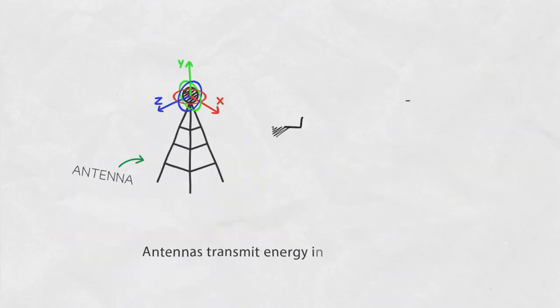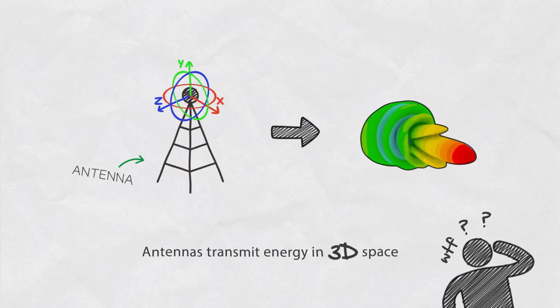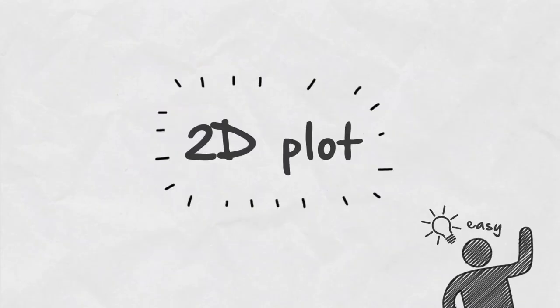Antennas transmit energy in three-dimensional space. To display this would be extremely difficult without very powerful computers. This is why scientists introduced a simplified method to describe radiation diagrams in a two-dimensional plot. This two-dimensional plot is still used today and let me explain how they work.